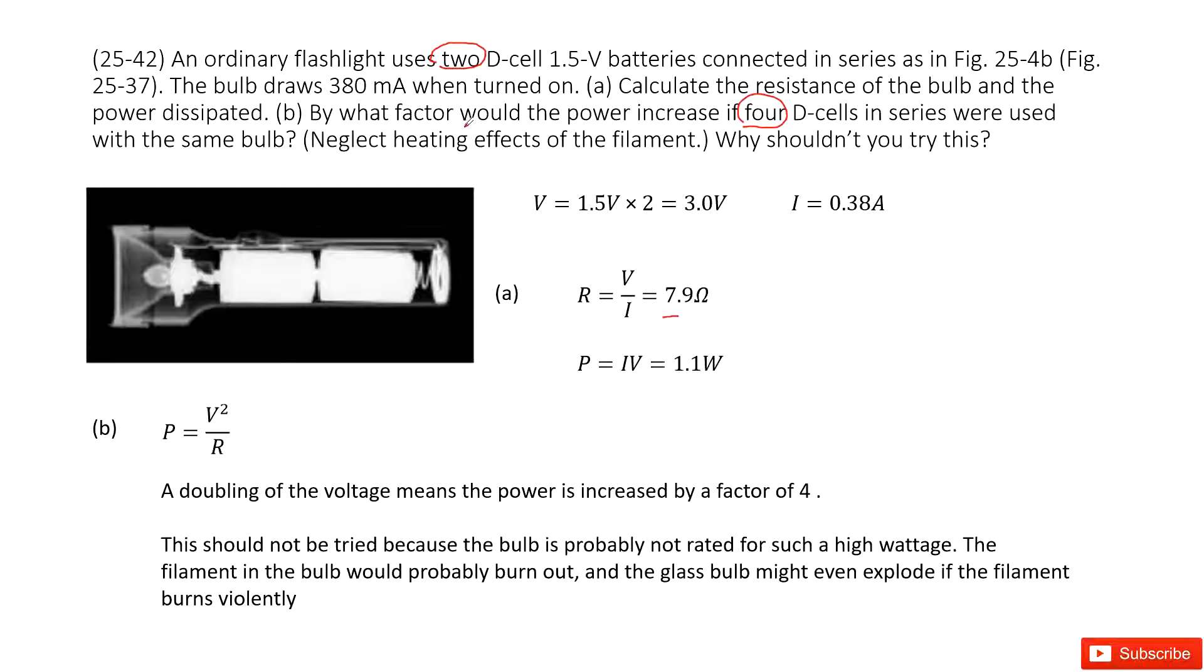And then ask you how would the power change? So we can consider in this case the resistance will not change for this light bulb because it's determined by the light bulb's materials, the length, the cross sections. This is not changed.